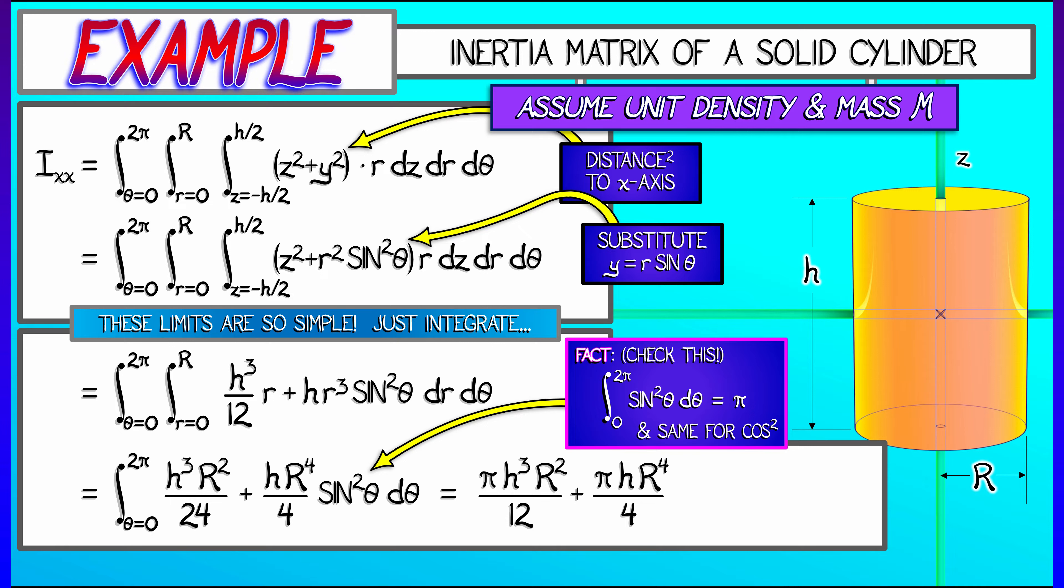Now we can combine these terms together. That's going to give us a nice numerical answer. When we factor out the mass as pi r squared h, this gives us a value of m times quantity h squared over 12 plus capital R squared over 4. That's the moment of inertia about the x-axis.